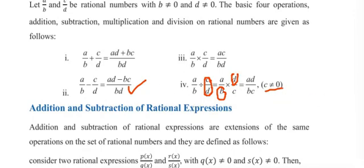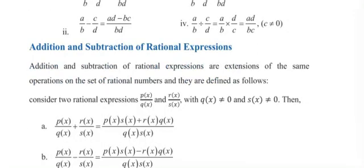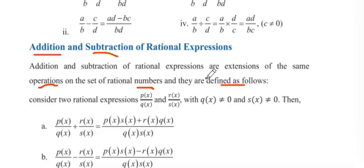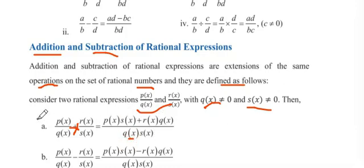Now, a rational expression follows the same rule. Addition and subtraction of rational expressions are extensions of the same operations on rational numbers and are defined as follows. Given two rational expressions P(x)/Q(x) and R(x)/S(x), with Q and S not equal to zero: P(x)/Q(x) + R(x)/S(x) = [P(x)·S(x) + R(x)·Q(x)] / [Q(x)·S(x)], and P(x)/Q(x) − R(x)/S(x) = [P(x)·S(x) − R(x)·Q(x)] / [Q(x)·S(x)].